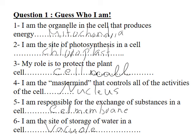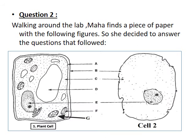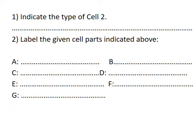Moving to question number two. Walking around the lab, Maha finds a piece of paper with the following figures. She decided to answer the questions that followed. Cell number one and cell number two. First question: indicate the type of cell two. What's the type of cell two? — Animal cell! Excellent, the type of cell two is animal cell.